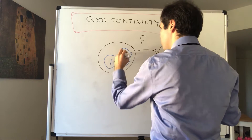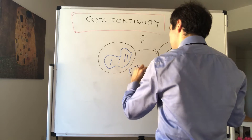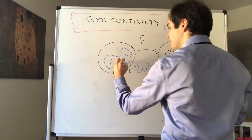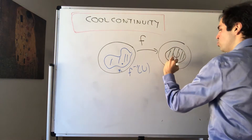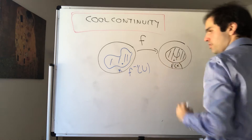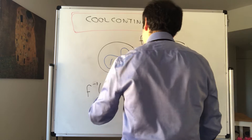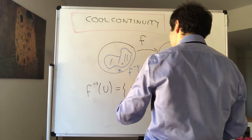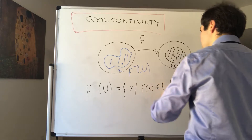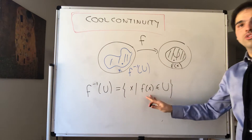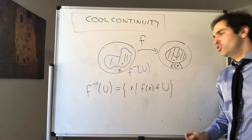Namely, f inverse of u is just the set of x such that f of x is guaranteed to be in u. So that's the definition: f inverse of u is just the set of x such that f of x is in u. It's very important to understand — this does not require f to be invertible at all.